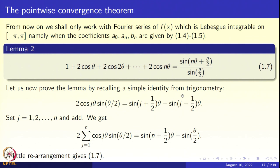We now come to the pointwise convergence theorem. We shall work only with Fourier series of a Lebesgue integrable function f(x) on (-π, π), with coefficients given by equations 1.4 and 1.5.